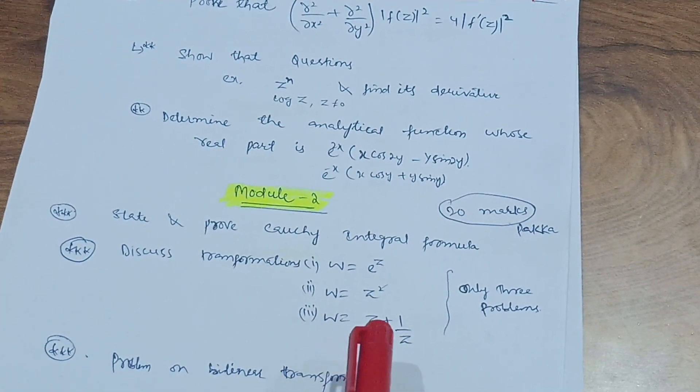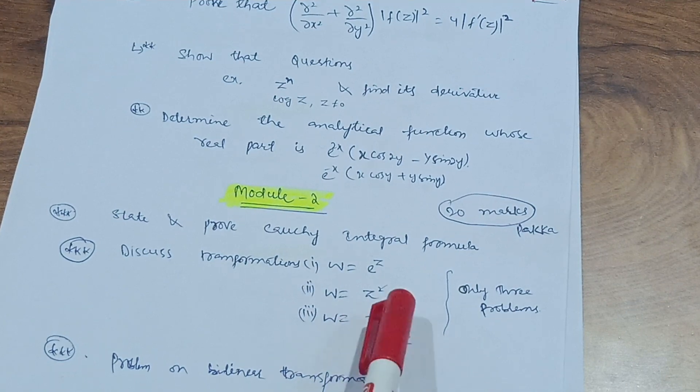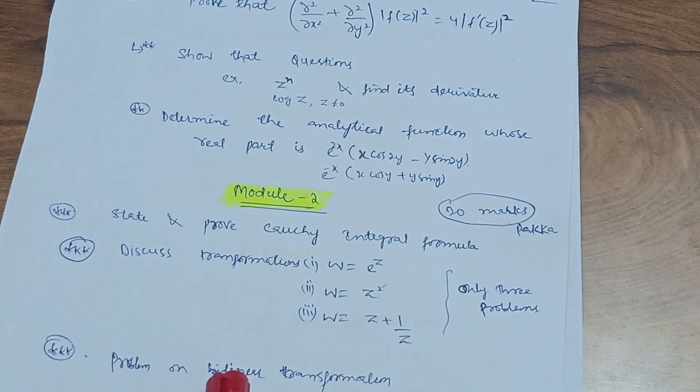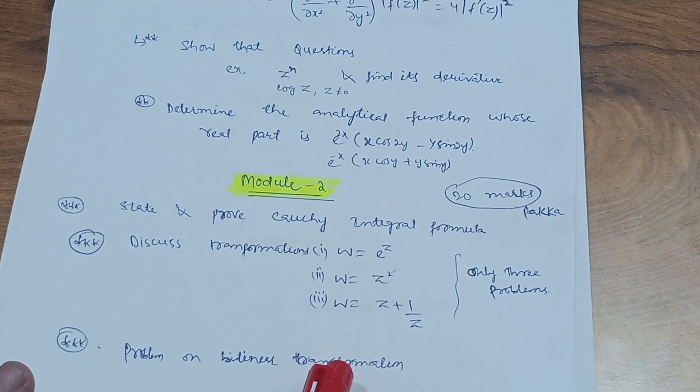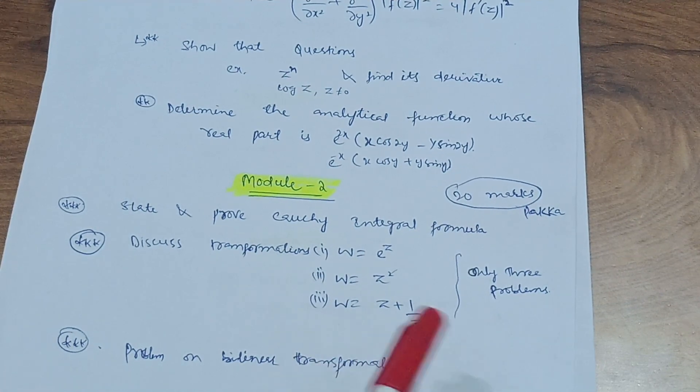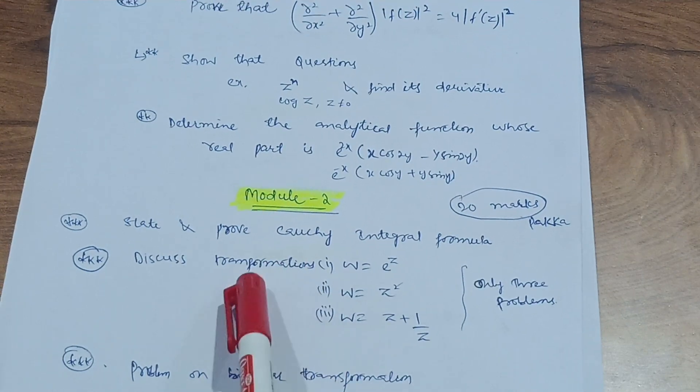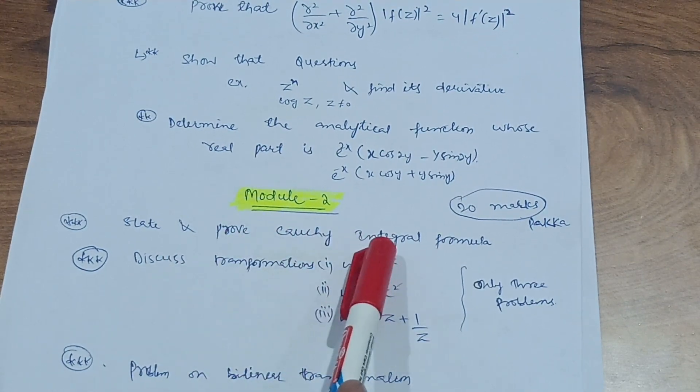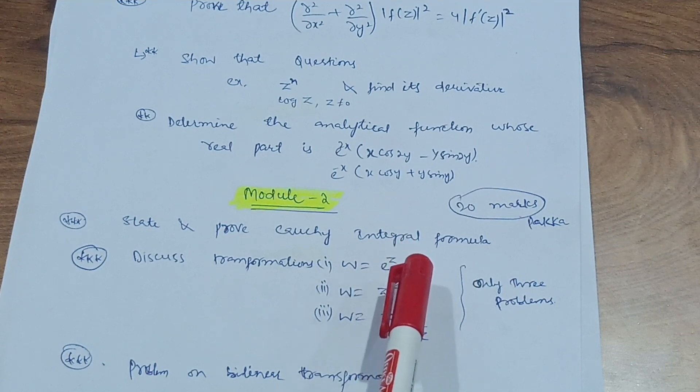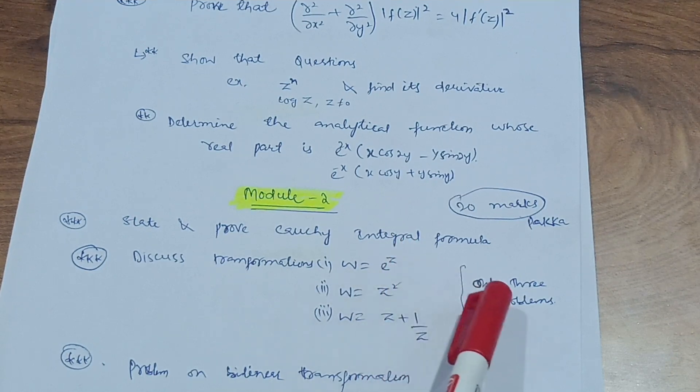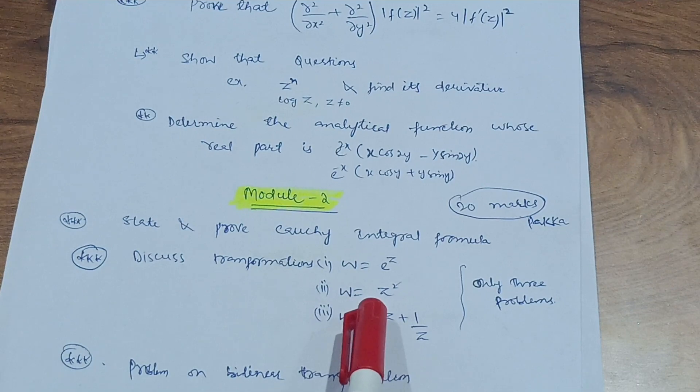Definitely one will be there. In this syllabus also there are these three transformations, so go through this. It is a very simple concept, so you will easily conclude this also. And also problems on bilinear transformation. If you cover these three topics, you will easily get 20 marks from this module also.